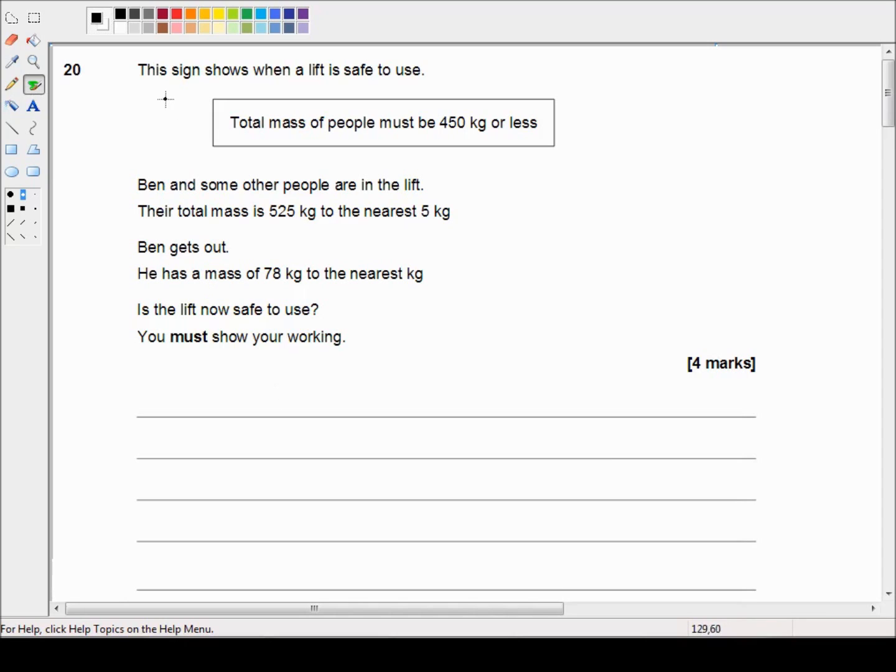Question 20 reads: This sign shows when a lift is safe to use. Total mass of people must be 450 kilograms or less. Ben and some other people are in a lift. Their total mass is 525 kilograms to the nearest five kilograms. Ben gets out. He has a mass of 78 kilograms to the nearest kilogram. Is the lift now safe to use? You must show your working.